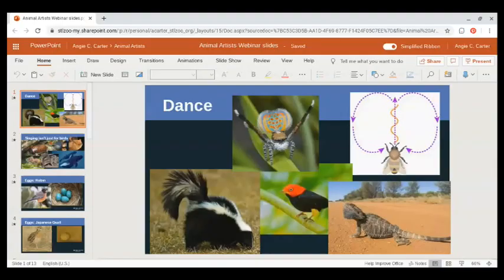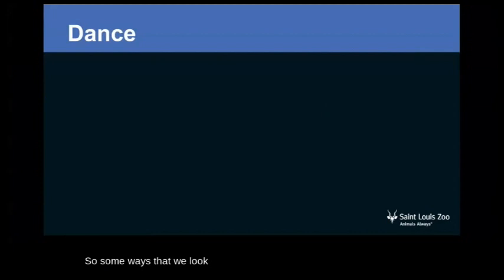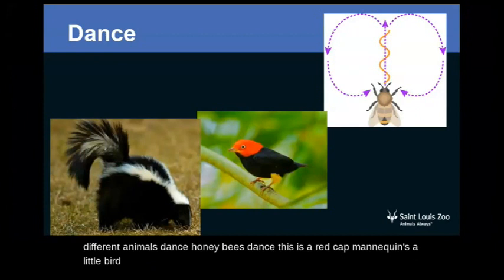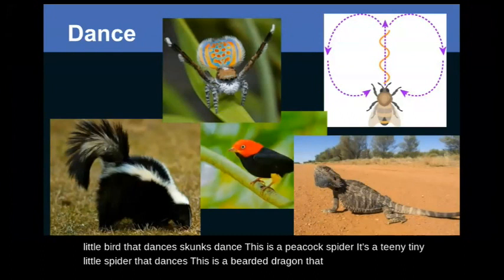Some ways that we look at animal art is through dance — all kinds of different animals dance. Honeybees dance. This is a red-capped manakin, that's a bird that dances. Skunks dance. This is a peacock spider, a teeny tiny little spider that dances. This is a bearded dragon that dances. All of these different animals dance in totally different ways.